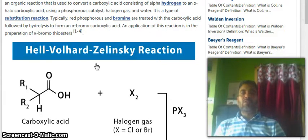Typically red phosphorus and bromine are treated with the carboxylic acid followed by hydrolysis to form an alpha-bromo carboxylic acid. An application of this reaction is in the preparation of alpha-bromo esters.